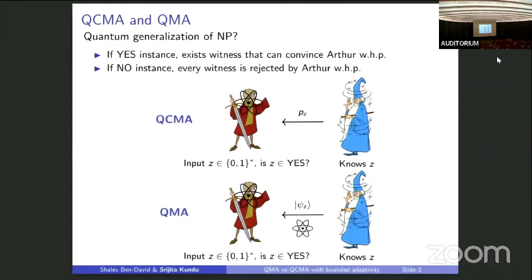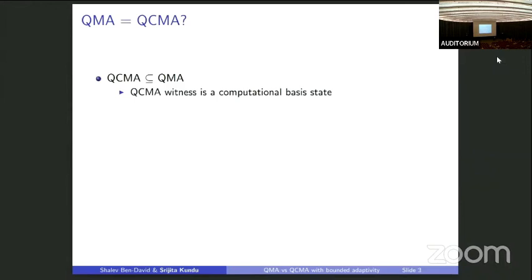In QMA instead, Arthur and the witness are both quantum. Arthur is a BQP machine and Merlin sends a quantum witness to Arthur. Now, whether or not these two classes are equal is one of the big open questions of quantum complexity theory. It's easy to see that QCMA is contained in QMA because a QCMA witness can just be encoded as a computational basis state.